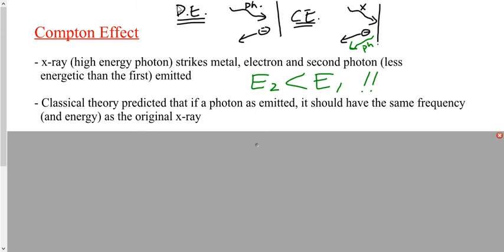The second photon was less energetic than the first — the energy went down. The frequency, therefore, would have gone down as well. The wavelength would have gone up, because wavelength is inversely related to energy and frequency. Quantum theory — also known as post-Einstein or correct theory — would absolutely predict that that second photon is going to be less energetic than the first photon.